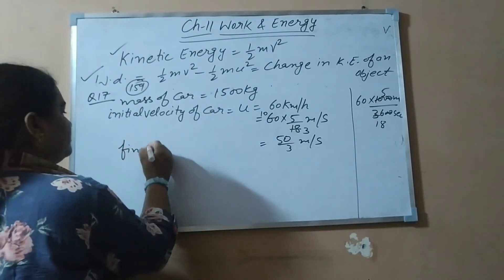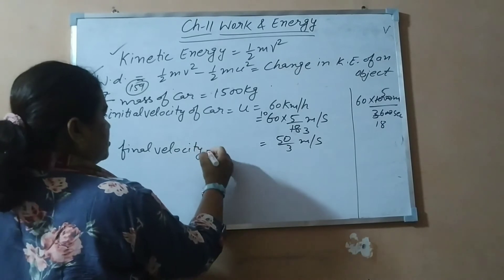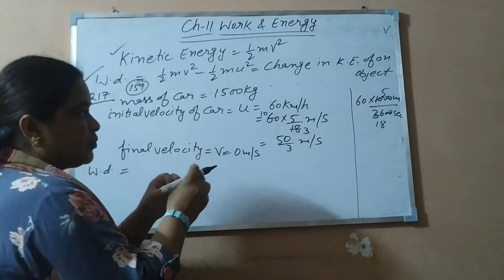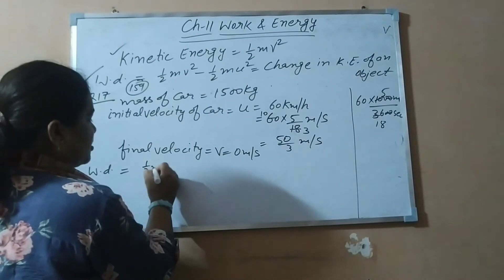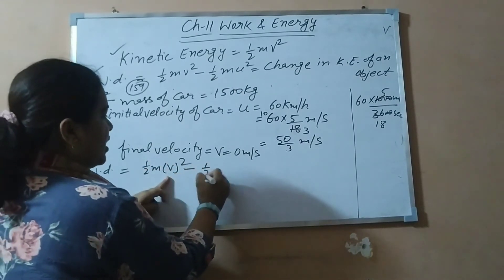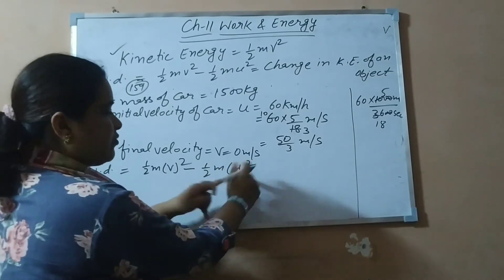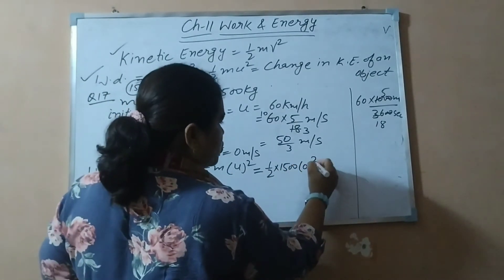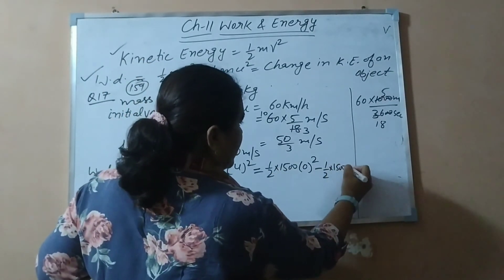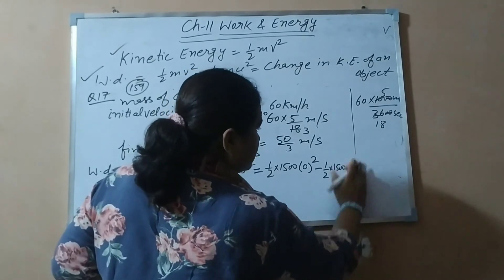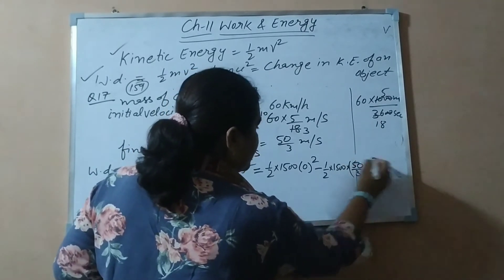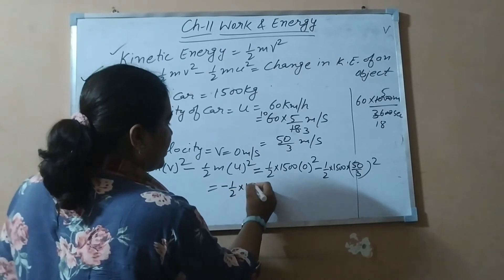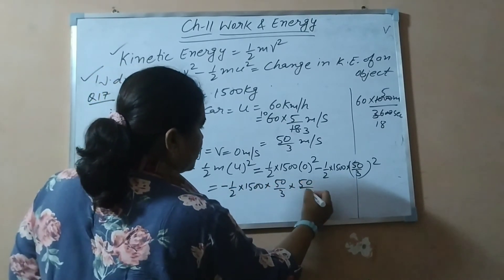The final velocity is 0 meters per second because the car stops. The amount of work done equals the change in kinetic energy: half m v squared minus half m u squared. Substituting: one-half times 1500 times 0 squared, minus one-half times 1500 times (50/3) squared. The first term becomes 0, so we solve: minus one-half times 1500 times 50/3 times 50/3.